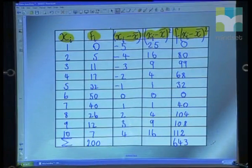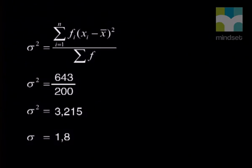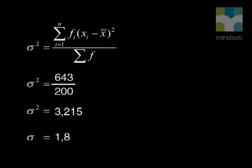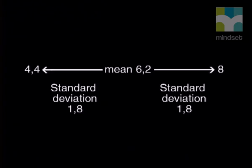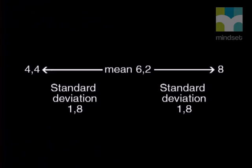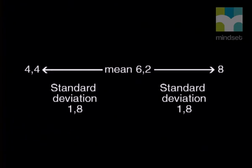We calculate the standard deviation by dividing the sum of column five by the sum of column two and taking the square root. The resulting standard deviation is 1.8. This tells us the spread of data from the mean — more precisely, 68% of the people gave scores between 4.4 and 8.